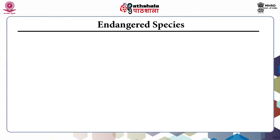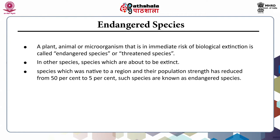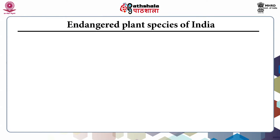What is an endangered species? A plant, animal, or microorganism that is in immediate risk of biological extinction is called an endangered or threatened species. In other words, species which are about to become extinct — species which are native to a region and whose population strength has reduced from fifty percent to five percent — are known as endangered species. Factors for this may be anthropogenic as well as natural.